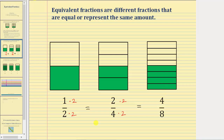If we do want to go from one-half to four-eighths, notice how we'd have to multiply the numerator and denominator by four. One times four is four, and two times four is eight.